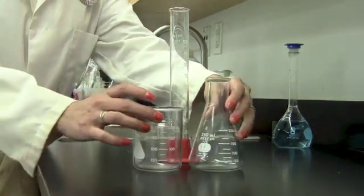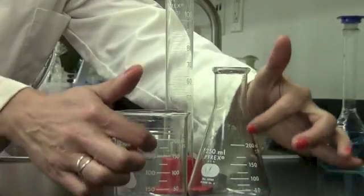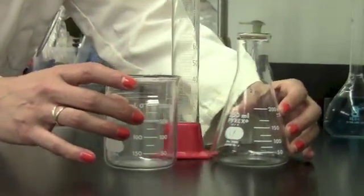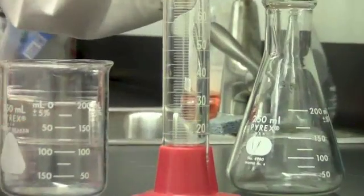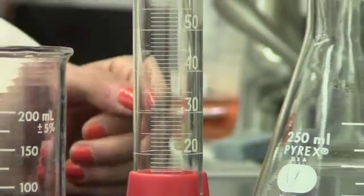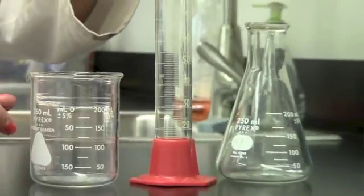Notice that beakers and flasks have very few volume markings on them, whereas the graduated cylinder has a whole lot of volume markings on it. To measure a liquid, I'm going to use the graduated cylinder.